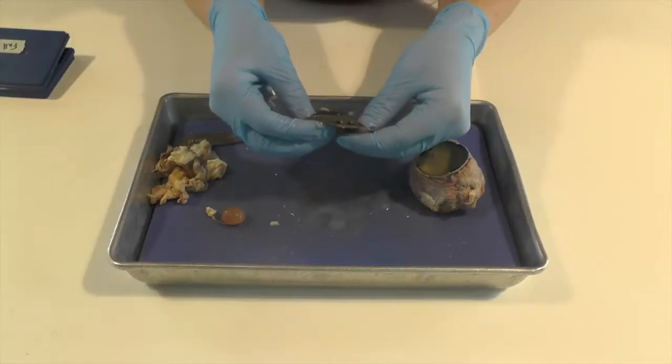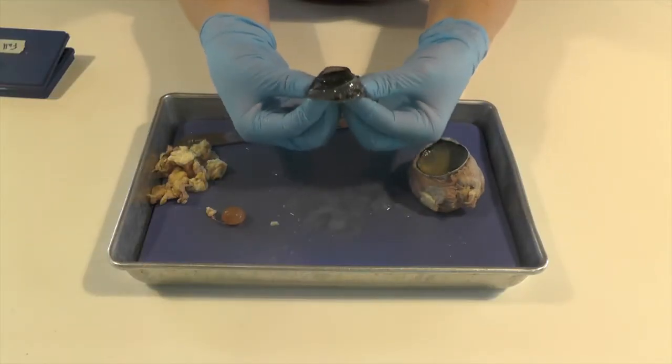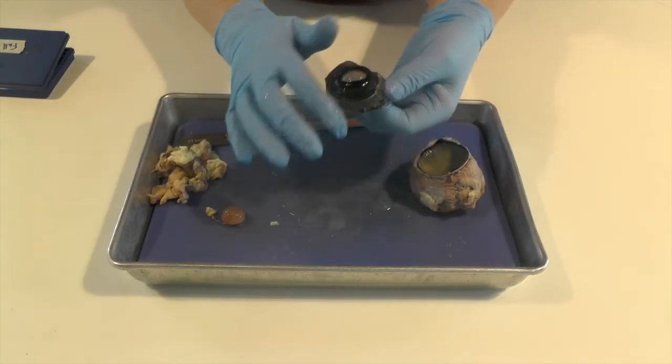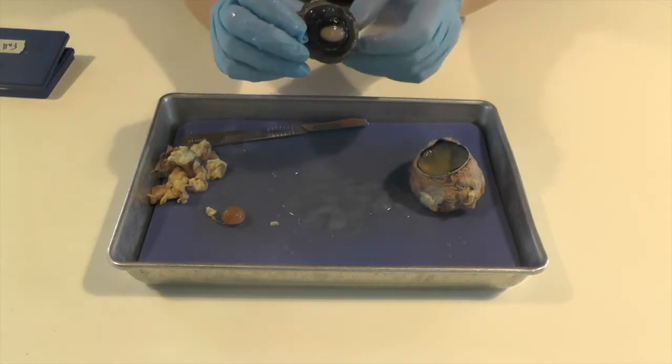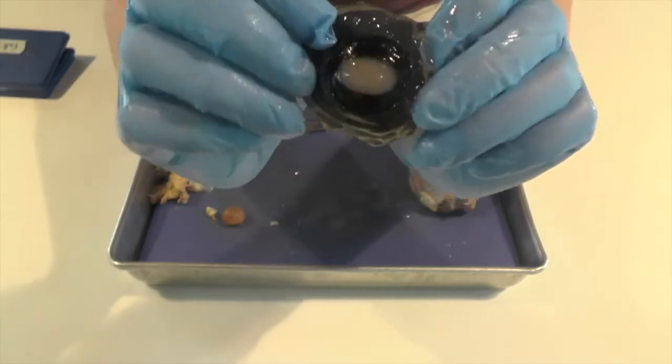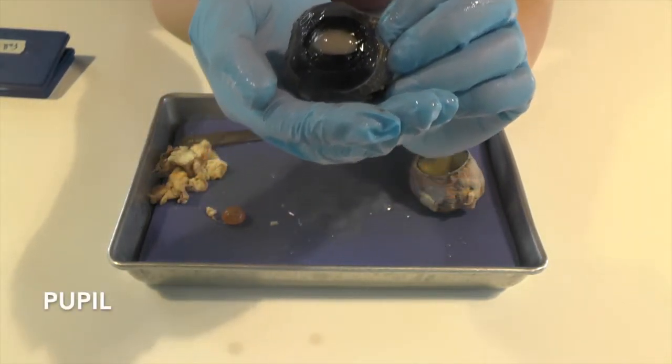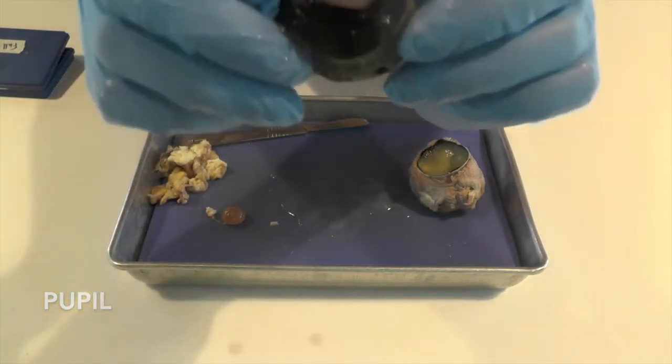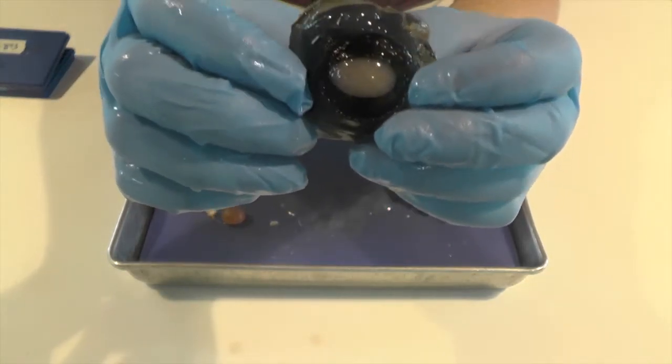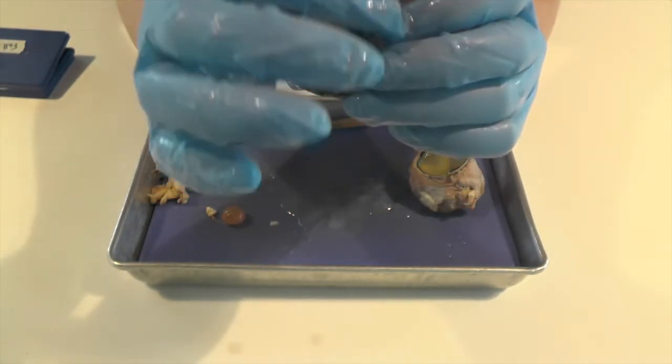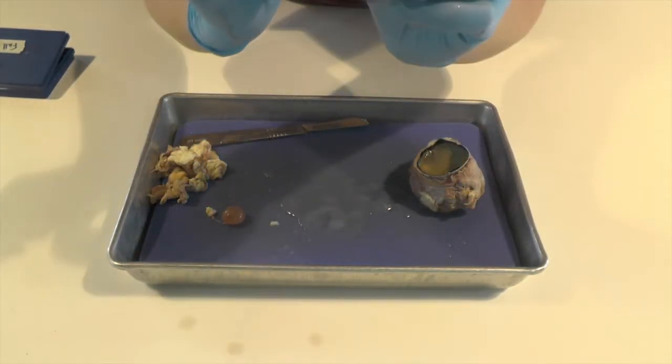And then if I turn our eyeball inside out, you can kind of get a better idea. So this is the pupil in the middle here. And our pupil is actually just a hole. And it's protected by the cornea, but it's just a hole to let light and information in. And then around the pupil here, you'll see the iris.